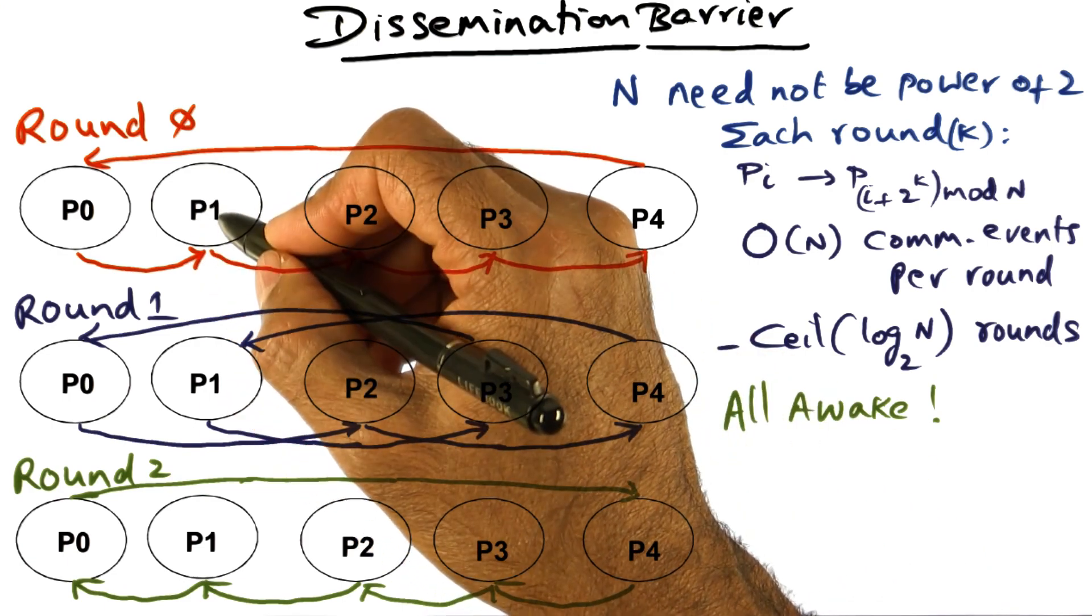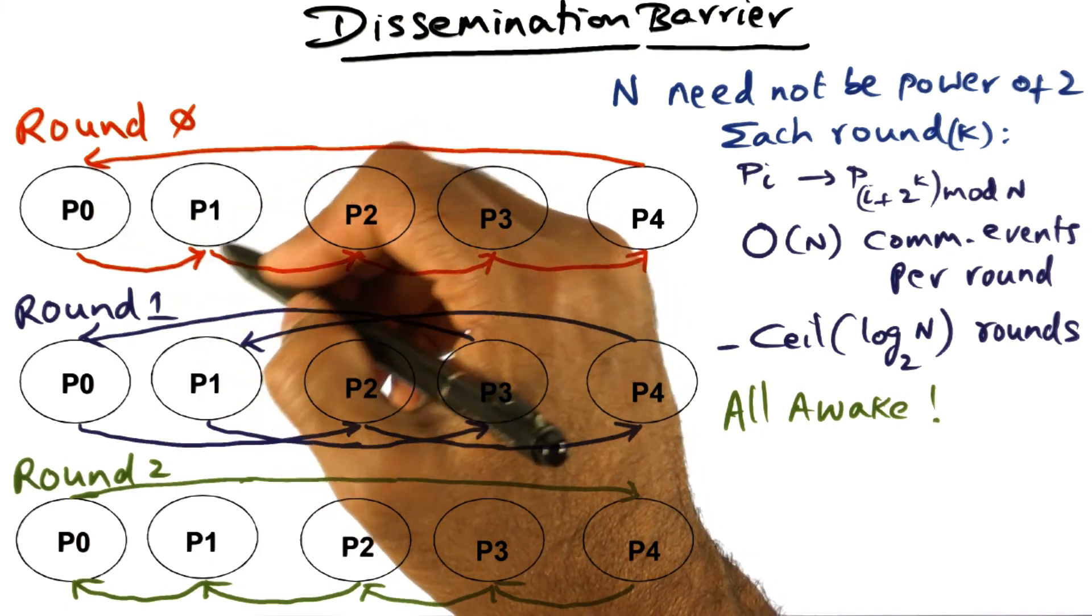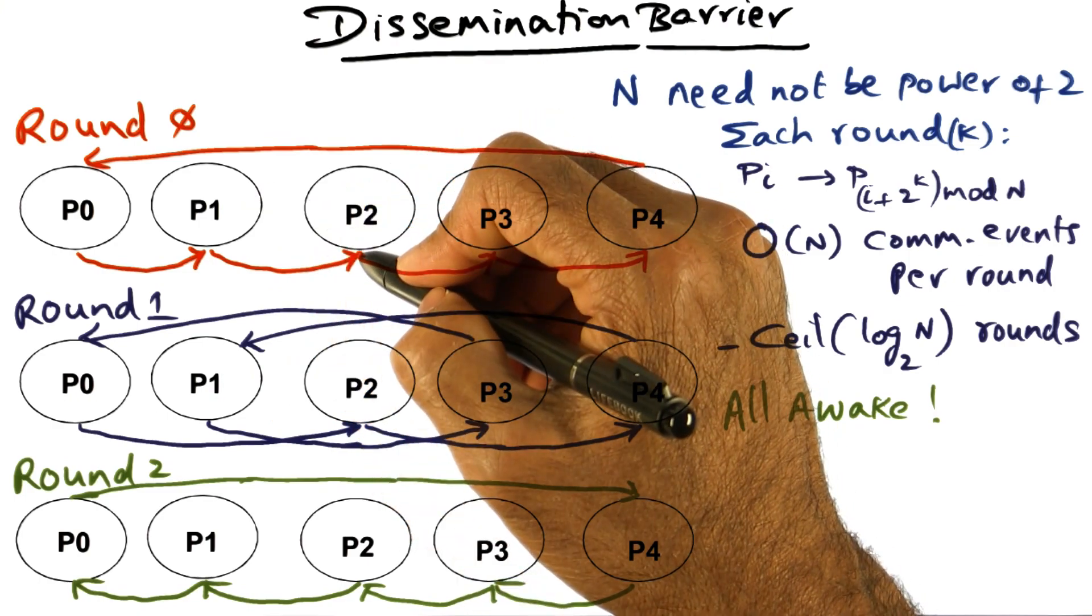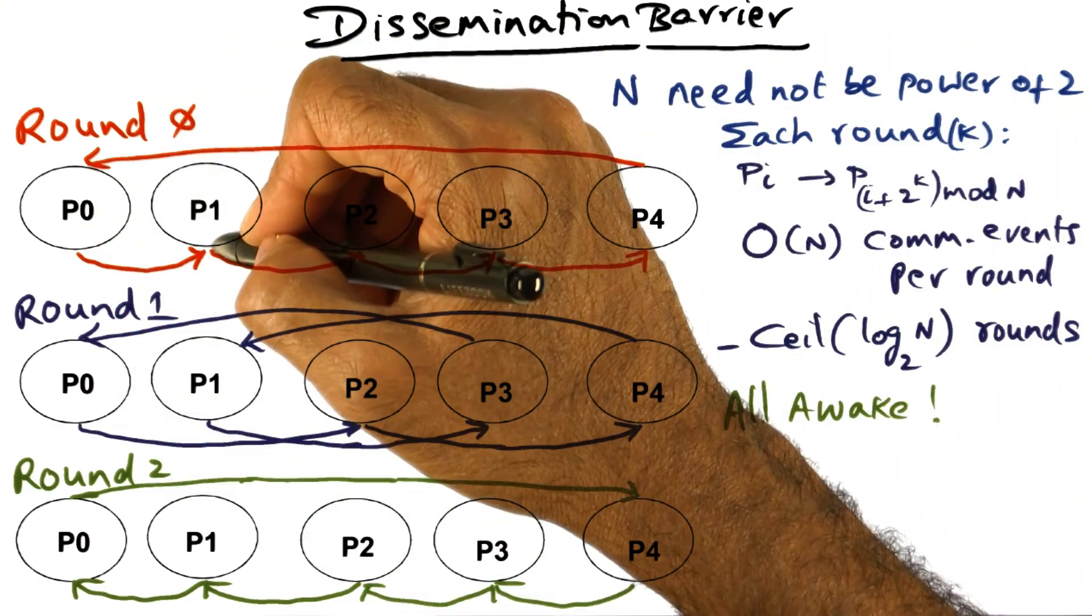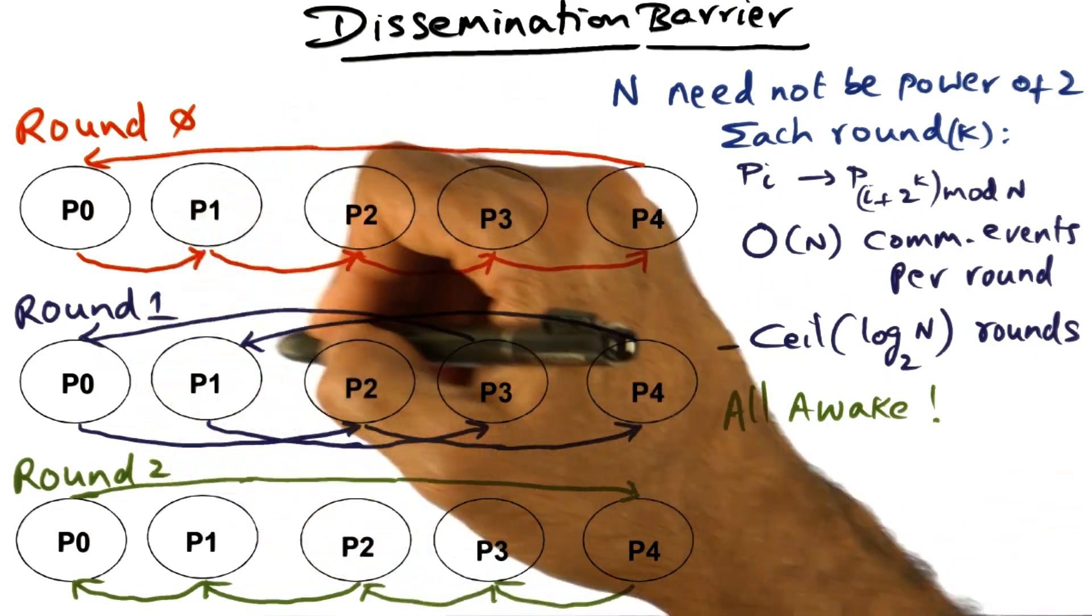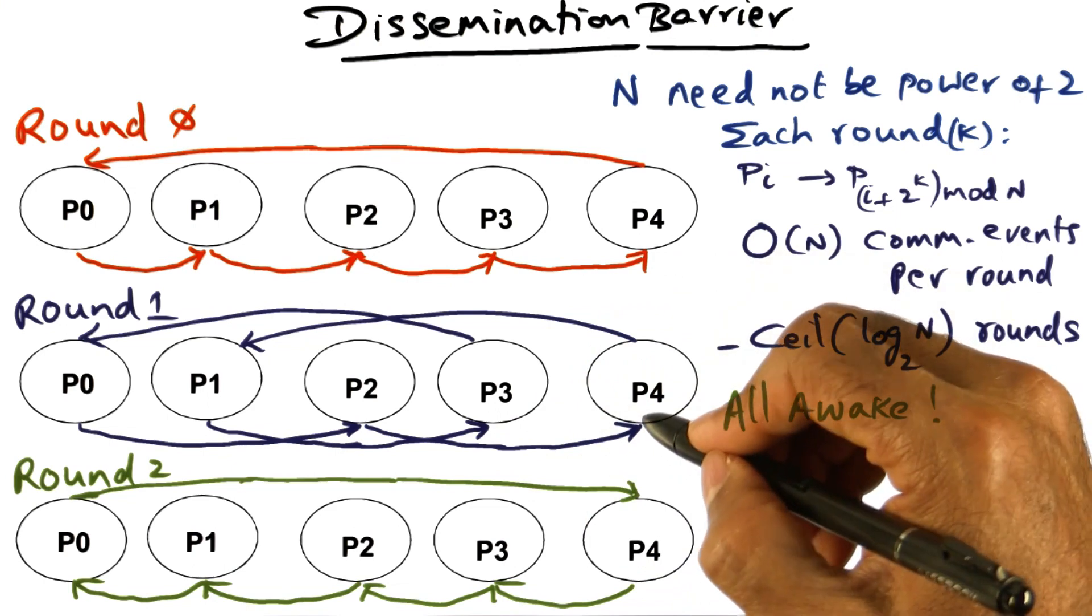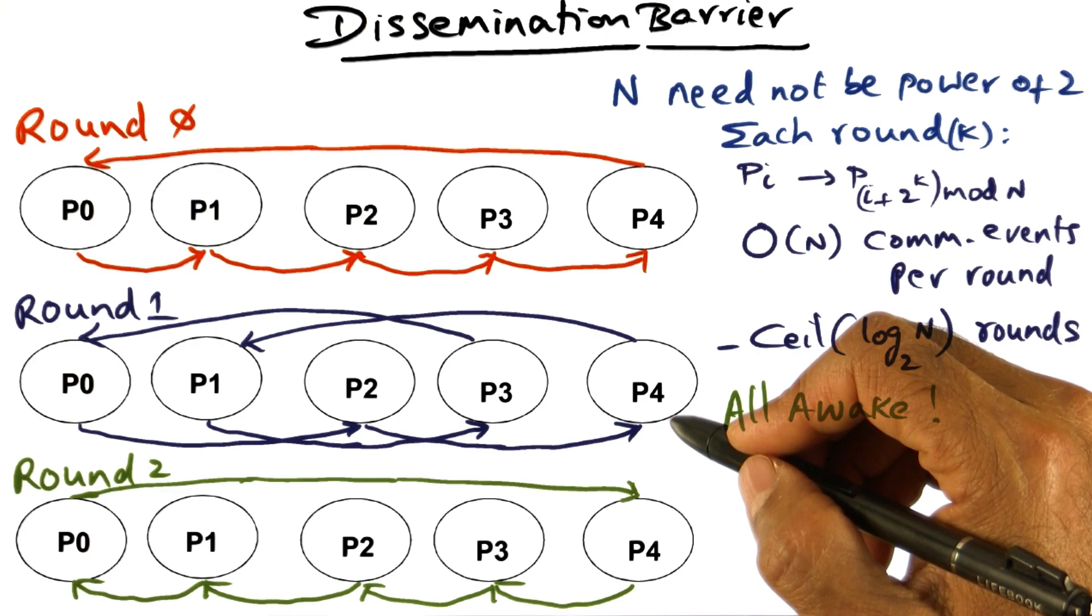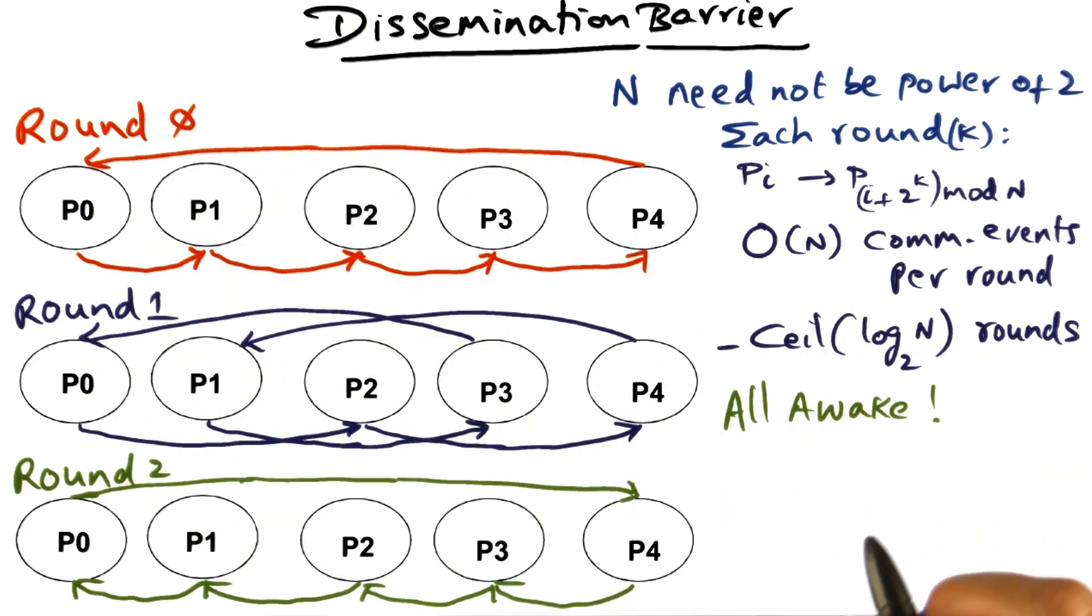Once again, because I know an ordained processor is going to talk to me in every round, the spin location for this guy is statically determined. So every round of the tournament, we can statically determine the spin location that a particular processor has to wait on in order to receive a message, which is really a signal from its ordained peer for that particular round of the dissemination barrier.